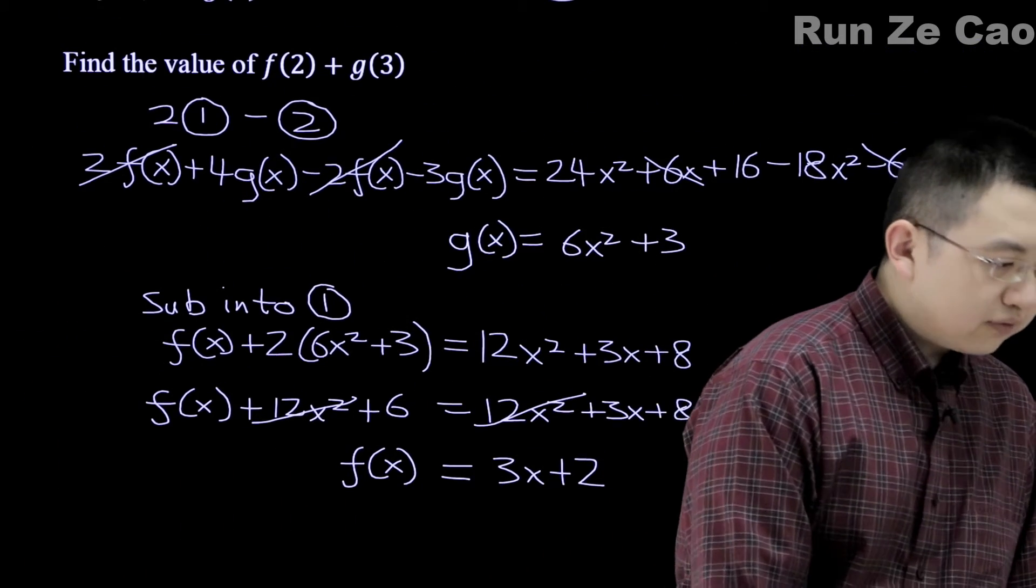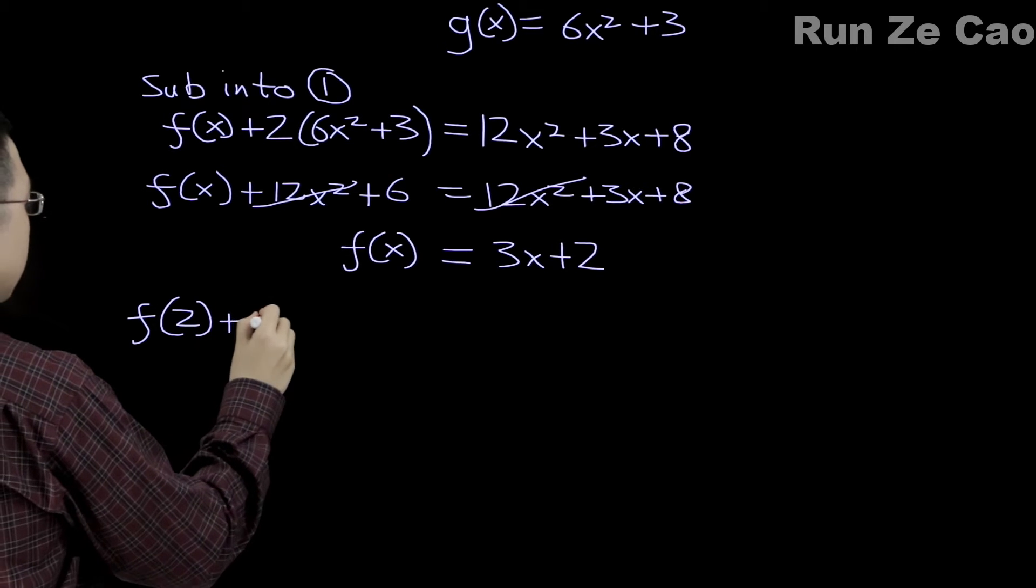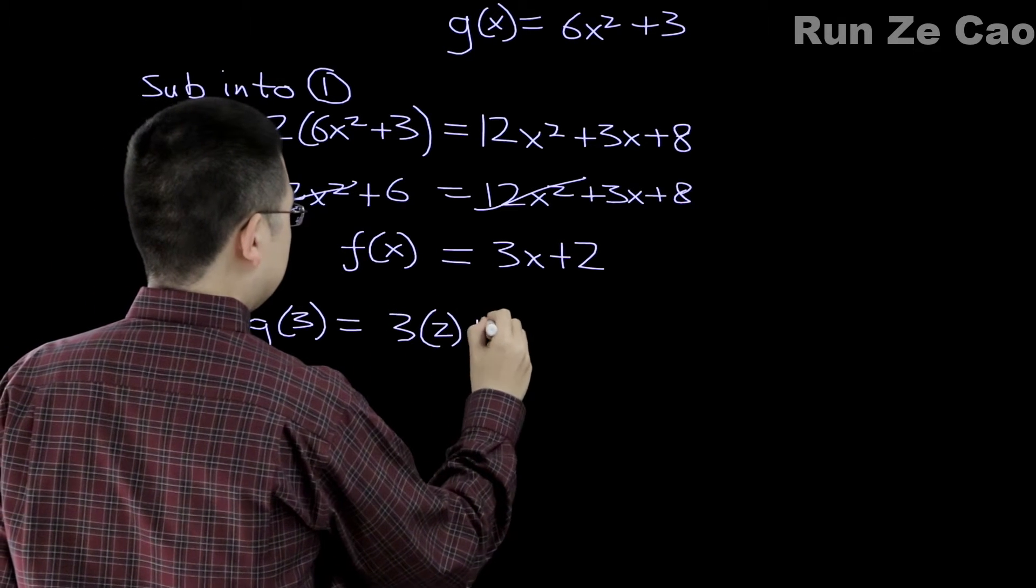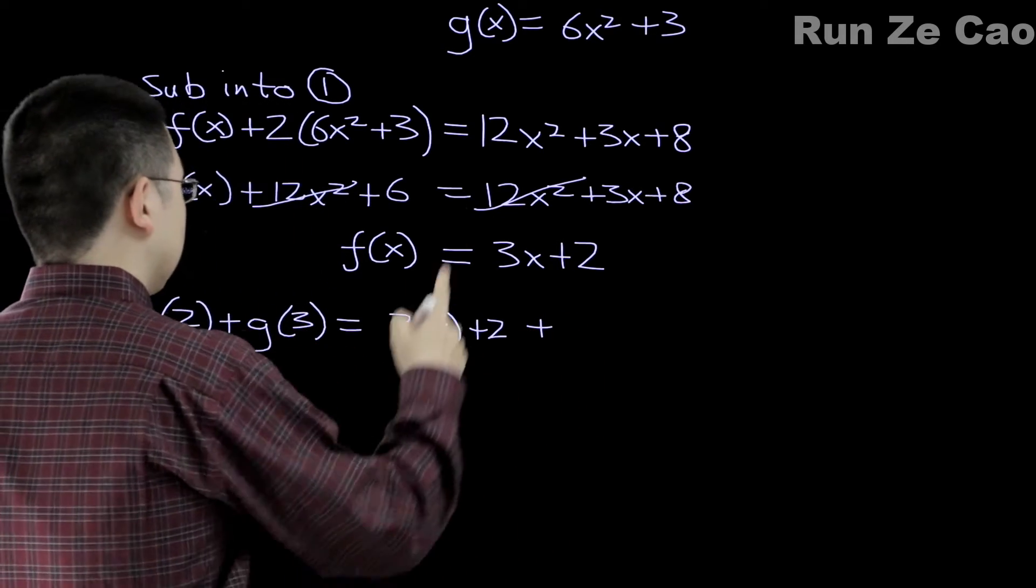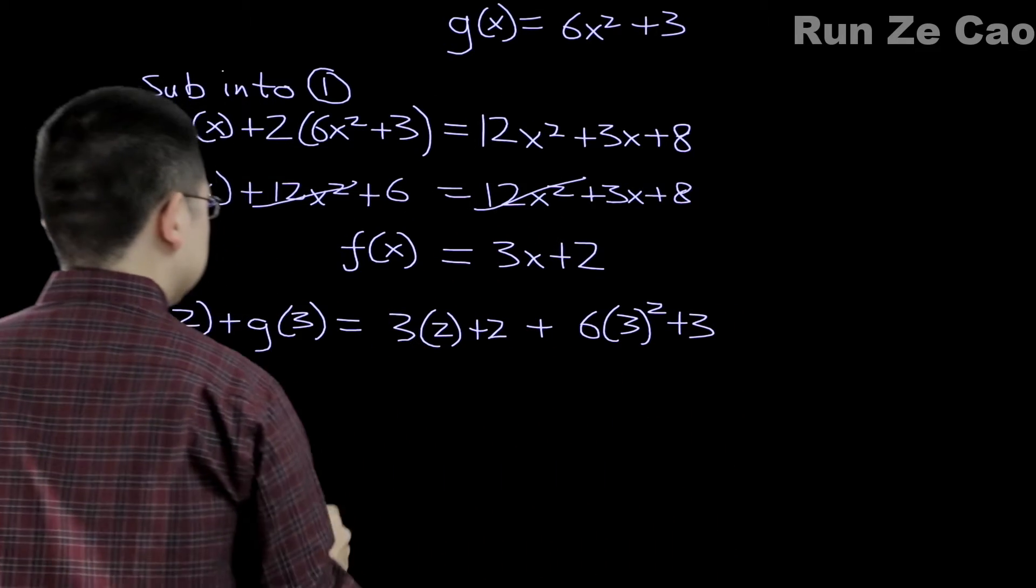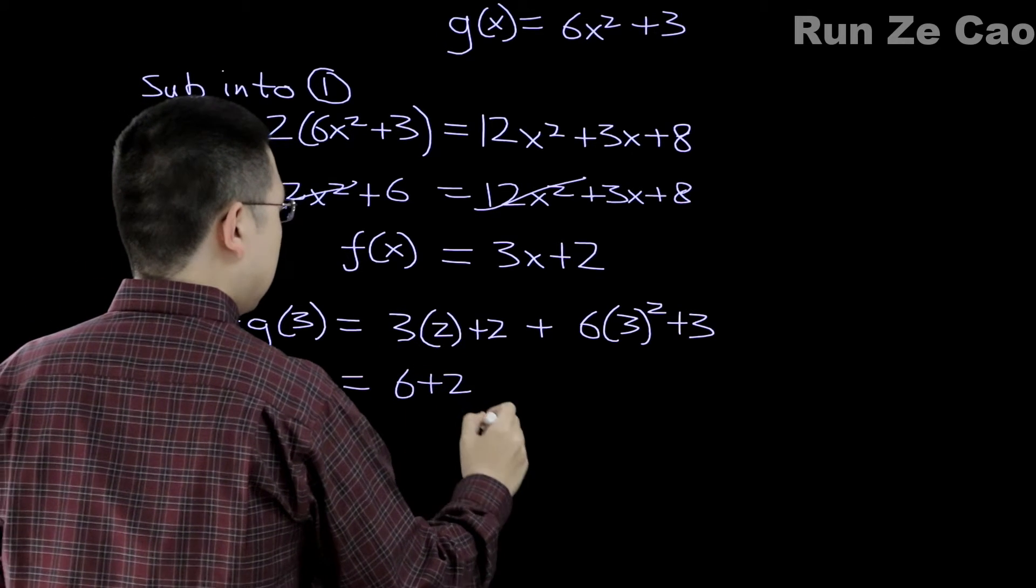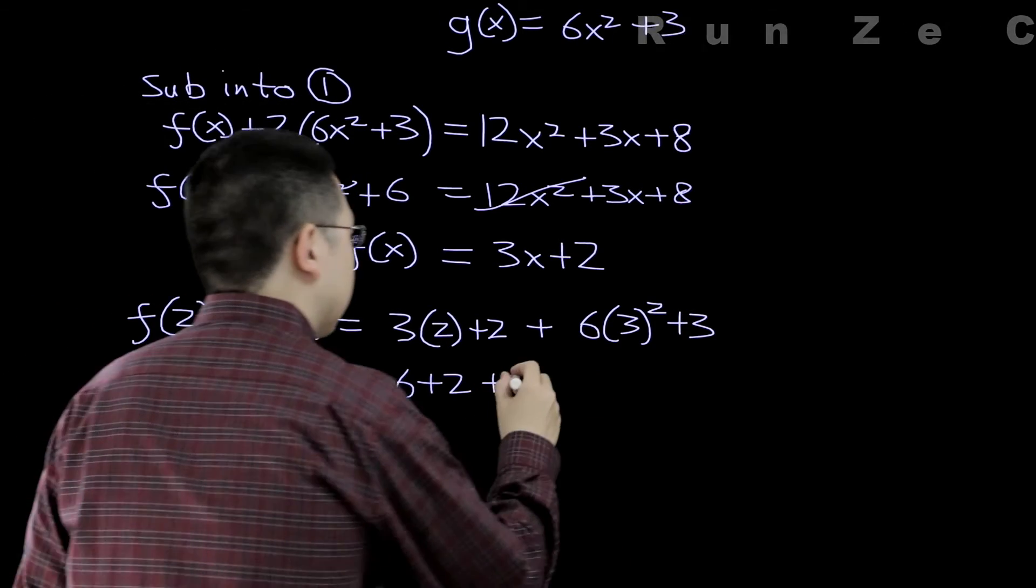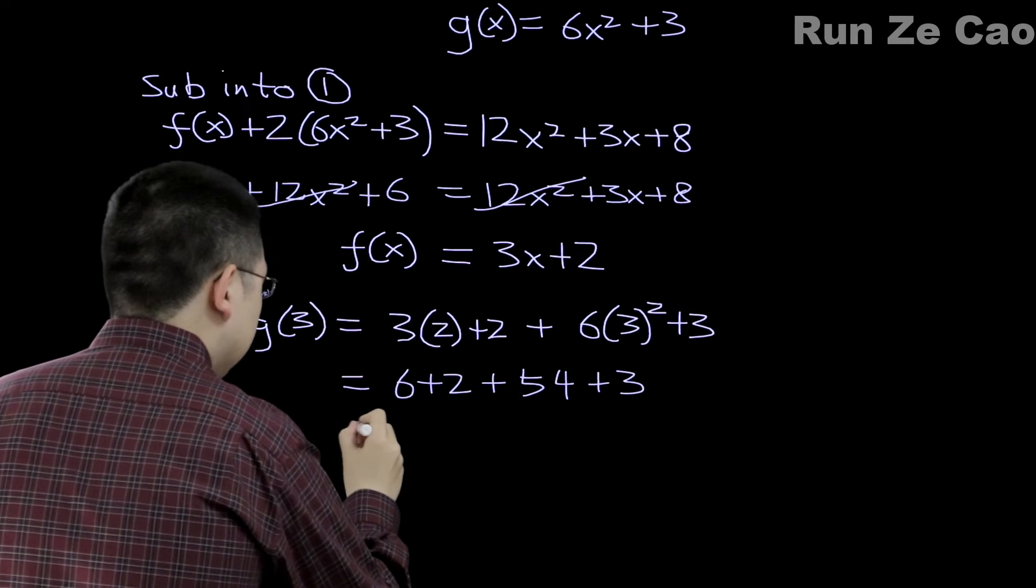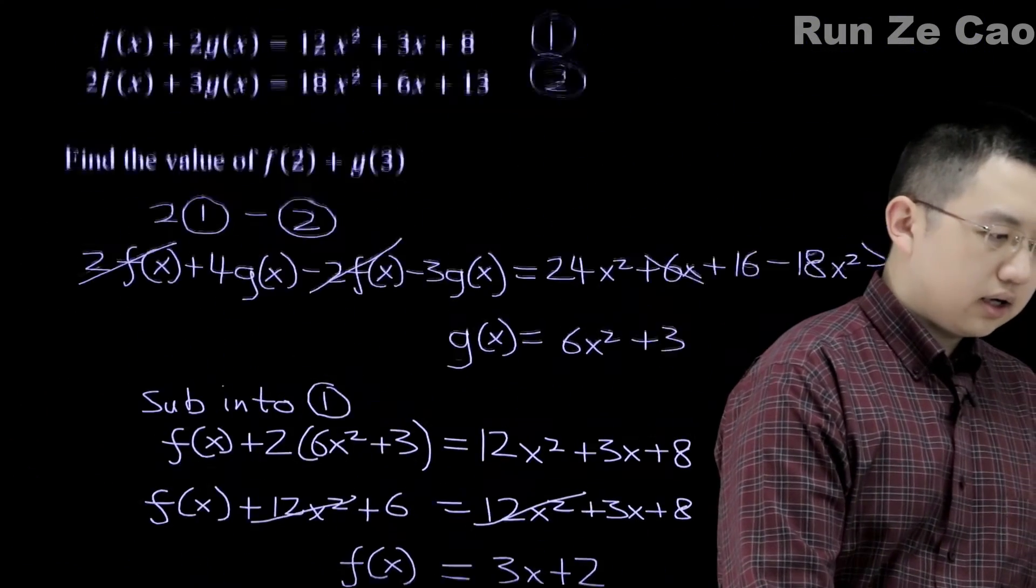So what are we looking for? f(2) plus g(3). f(2) plus g(3) is equal to 3 times 2 plus 2 plus g(3), which means 6 times 3² plus 3. And this is 3 times 2 is 6 plus 2 plus 6 times 9 is 54 plus 3, so here we have a total of 65.